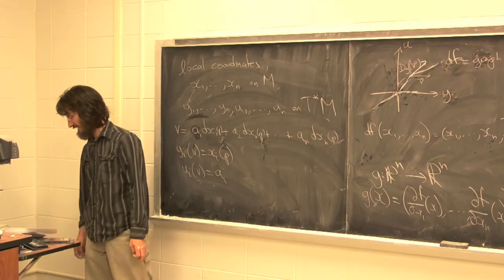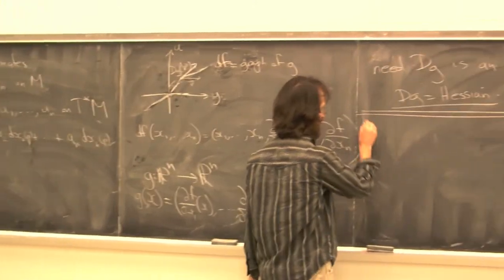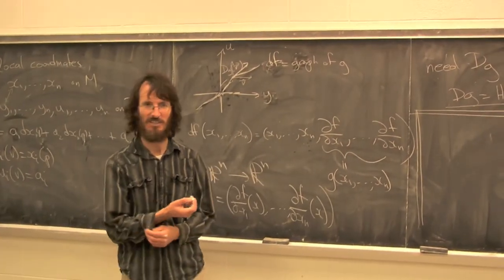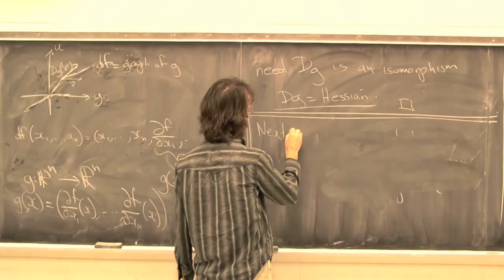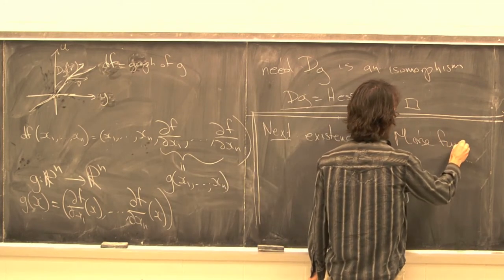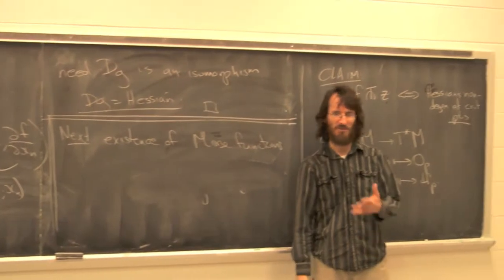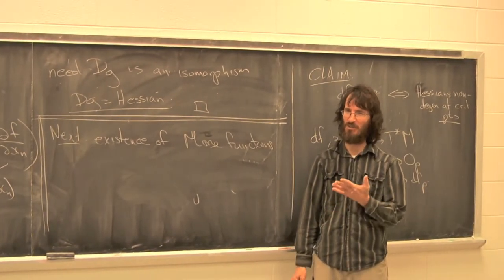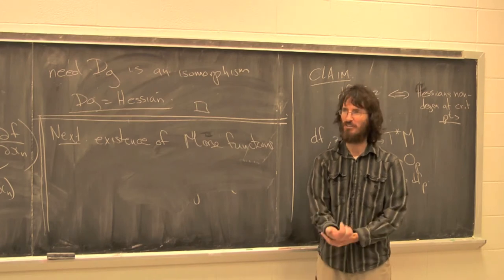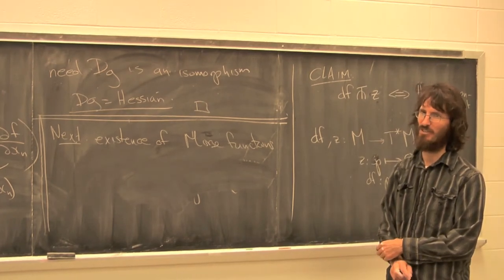The next thing I want to do is give a slightly hand-wavy argument as to why we can always perturb a given function so that Df is transverse to the zero section. That's going to prove that Morse functions exist. It'd be great to just apply the transversality theorem and wiggle Df a little bit, but the problem is if you wiggle Df, it's probably no longer closed as a one-form, so it's not likely to be df for any function f. You want to wiggle f, not Df.